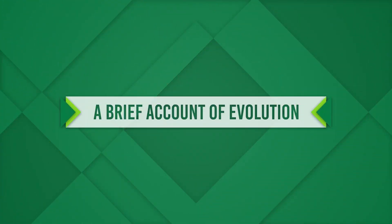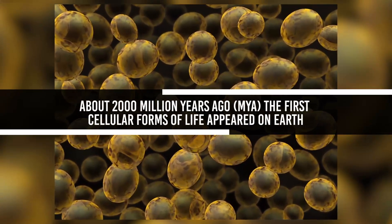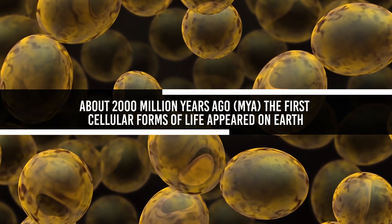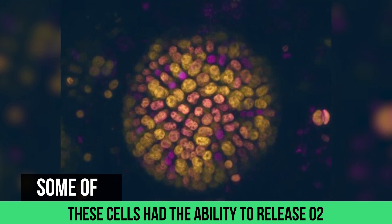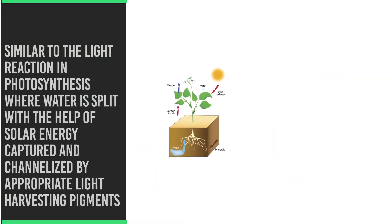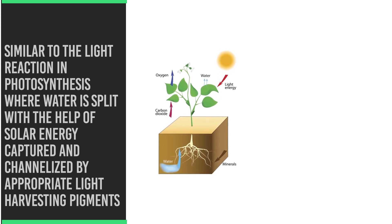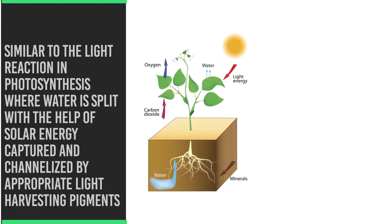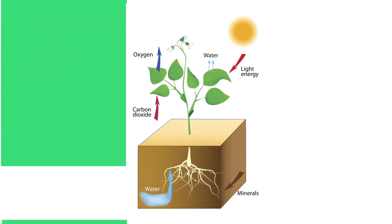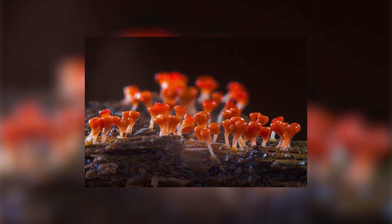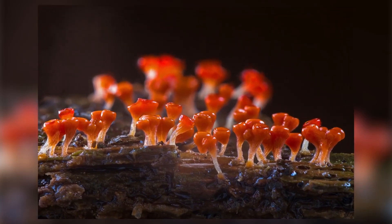A brief account of the evolution. About 2000 million years ago, the first cellular forms of life appeared on Earth. The mechanism of how non-cellular aggregates of giant macromolecules could evolve into cells with a membranous envelope is not known. Some of these cells had the ability to release oxygen. The reaction could have been similar to the light reaction in photosynthesis, where water is split with the help of solar energy captured and channelized by the appropriate light harvesting pigments. Slowly, single-celled organisms became multicellular life forms.